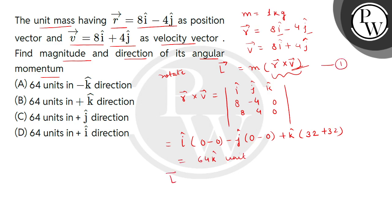This is L vector is equal to m, this is 64 k cap unit. It means that angular momentum, its magnitude is 64 and k cap is the unit vector along plus k direction.